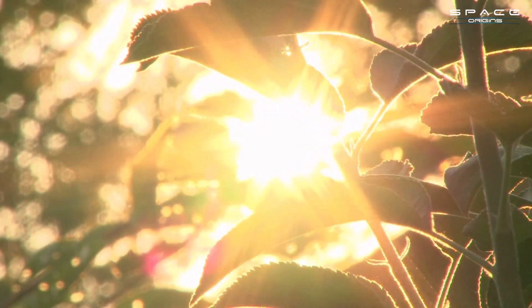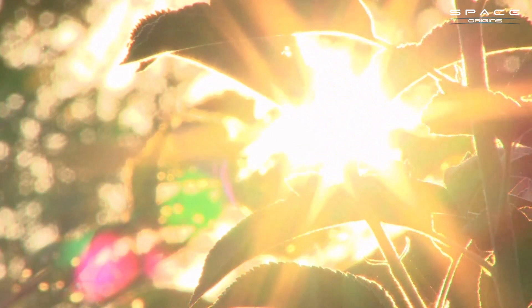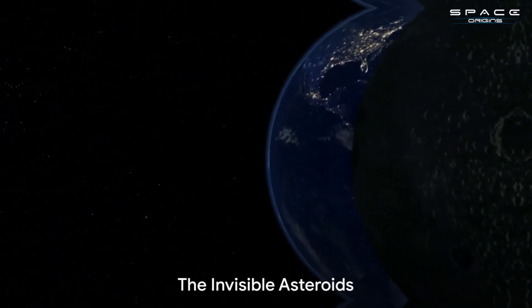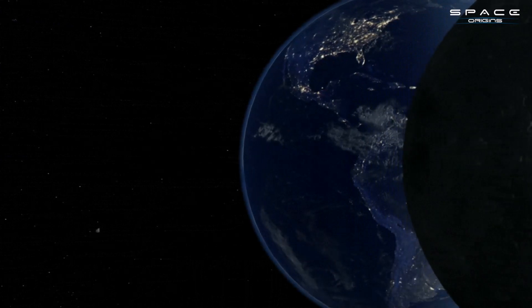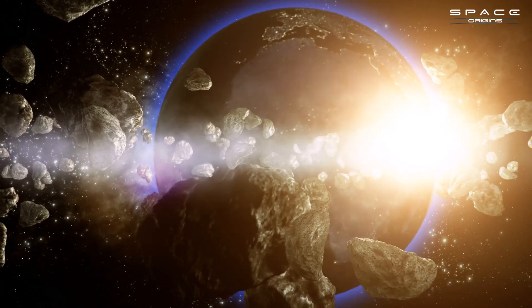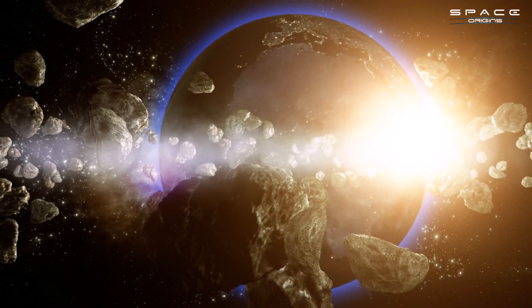Indeed, the sun's glare presents a formidable challenge for astronomers seeking to protect our planet. Some asteroids, particularly Atens with orbits close to Earth's, are almost permanently invisible from telescopes due to their position in the sunlit sky.